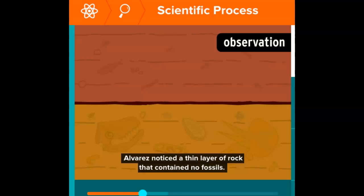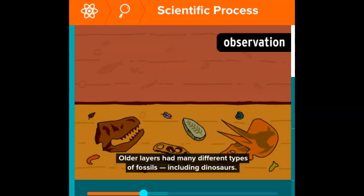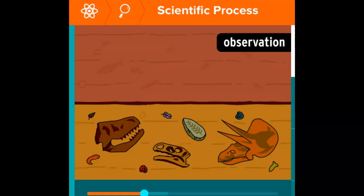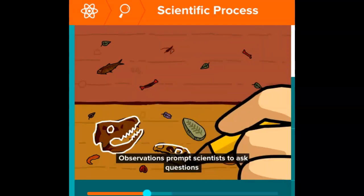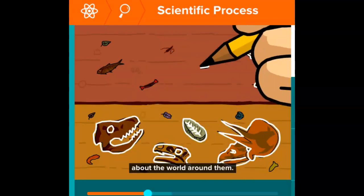Alvarez noticed a thin layer of rock that contained no fossils. Older layers had many different types of fossils, including dinosaurs, while newer layers had only a few fossils with very little variation and no dinosaurs. Observations prompt scientists to ask questions about the world around them.